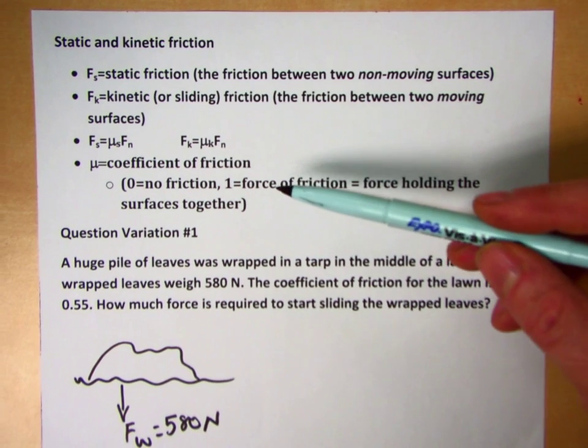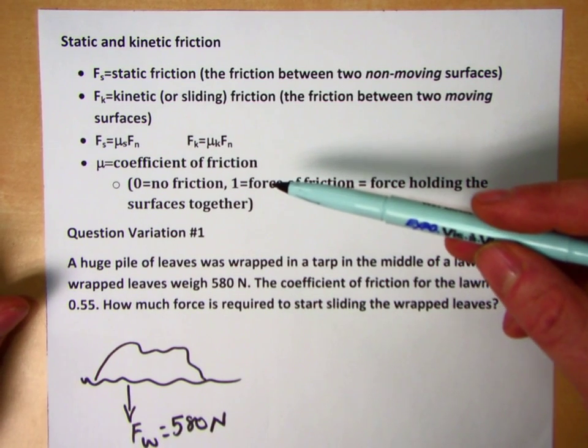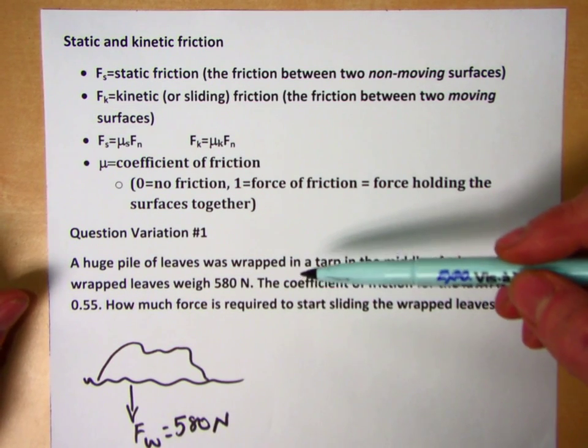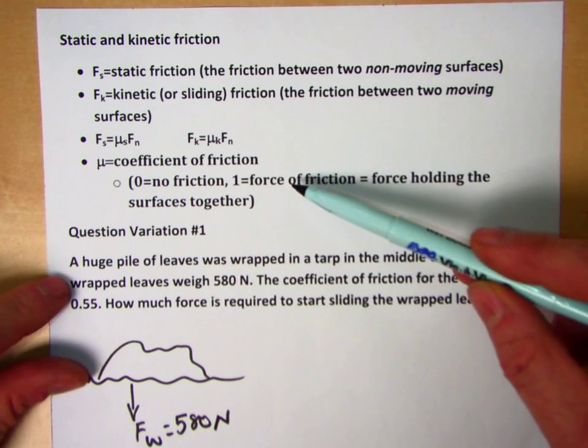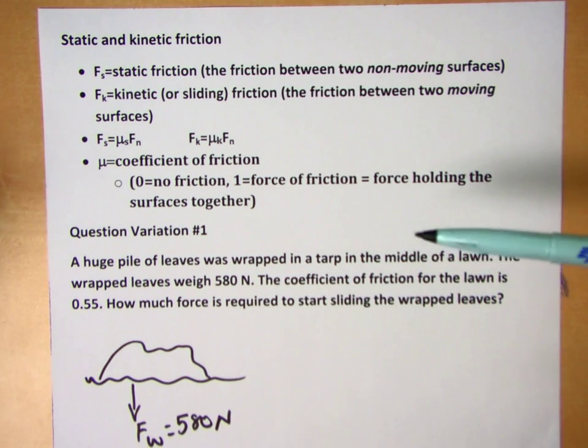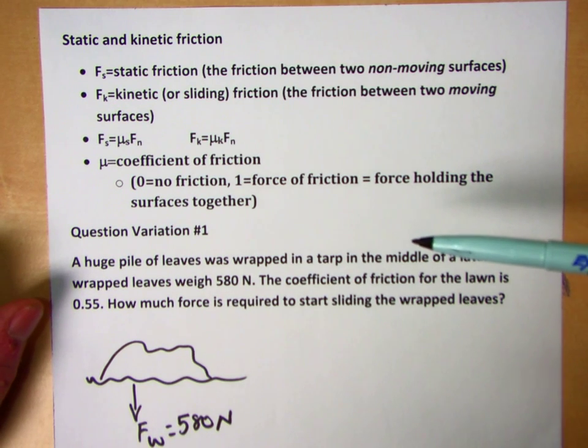Coefficient of friction is a dimensionless quantity with a range of zero, where we have no friction, to one, where we have the maximum amount of friction. It's the force pulling the surfaces together.